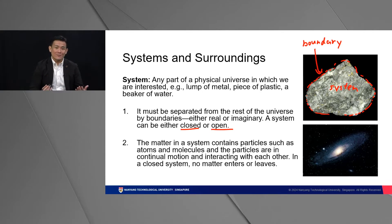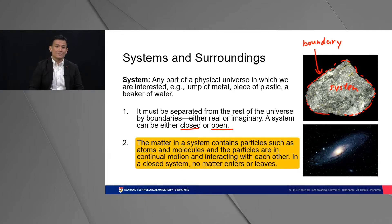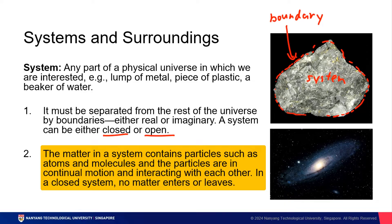The entire universe can be a system in itself. If you take the universe as a system, the matter in that system will contain all of the universe's particles, such as all its atoms, its molecules, and these particles are always in continuous motion and interacting with one another. In a closed system, such as the rock, no matter enters or leaves — it stays within its boundary and cannot easily exceed it.